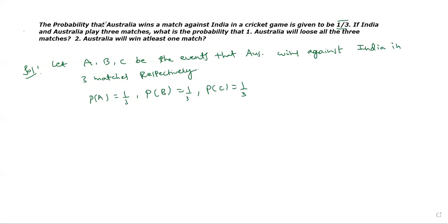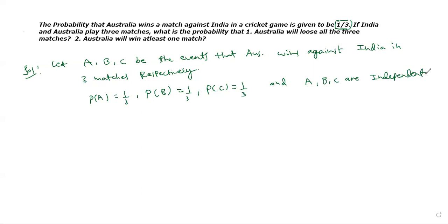Given that the probability that Australia wins any of the three matches — taking the matches as A, B, C — A, B, C will be the events that Australia wins against India in three matches respectively. And clearly you can observe that winning of matches A, B, C are independent. Winning of matches is always independent.